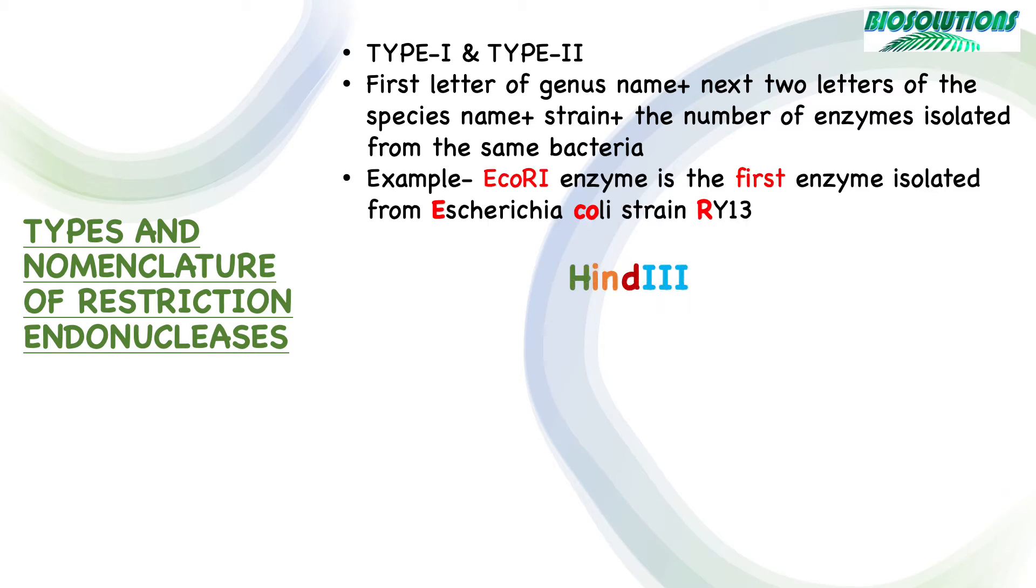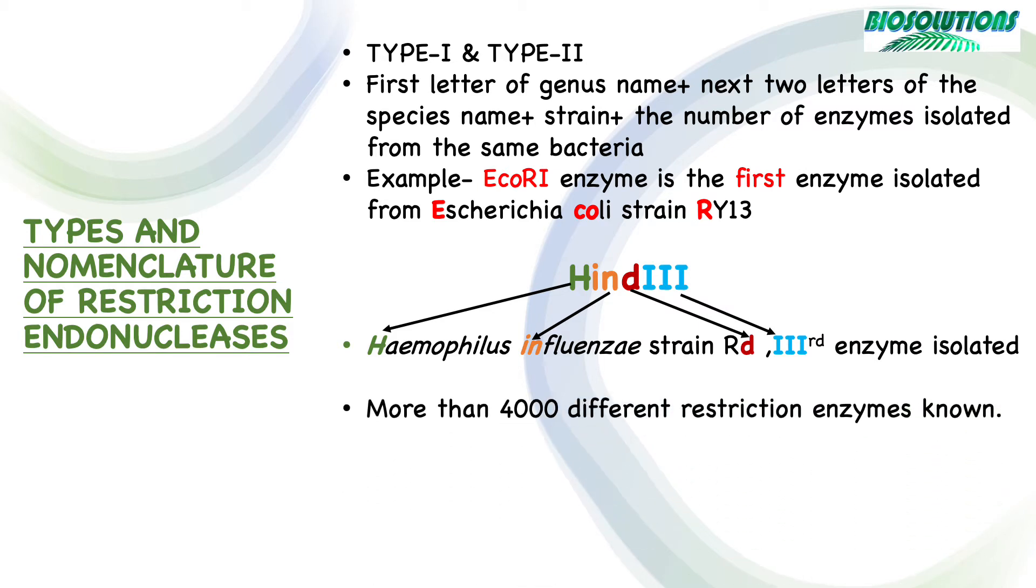E from Escherichia, CO from coli, R from strain RY13, and roman number 1 because this was the first enzyme to be isolated from E. coli. Similarly, HindIII was isolated from Haemophilus influenzae strain RD and was the third enzyme to be isolated.